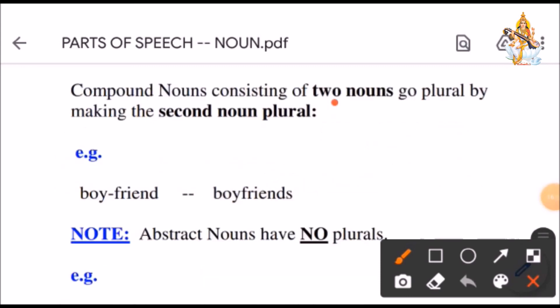Compound nouns consisting of two nouns go plural by making second noun plural. For example, boyfriend, boy-friends. We have got two nouns together, boy and friend. So, the end words will become plural. Boy-friends.